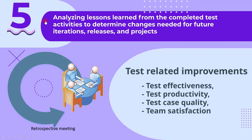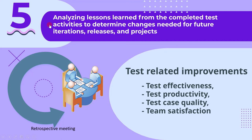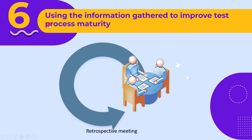The fifth activity is analyzing lessons learned from the completed test activities to determine changes needed for future iterations, releases, and projects. Since the testing activities are finished, we may now know the strengths and weaknesses of the team. During test closure meetings, the lessons learned and test-related improvement points are discussed, and all the improvement points are recorded.